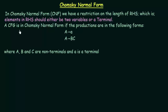A CFG is in Chomsky Normal Form if the productions are in the following forms. The first one says A gives small a. Here capital A is a variable or non-terminal symbol and small a is a terminal symbol. So in the RHS there is just a single terminal symbol, which means it is in Chomsky Normal Form. In the second production, A gives BC, where both B and C are variables or non-terminal symbols. So if we have two variables in the RHS, it is also in Chomsky Normal Form.